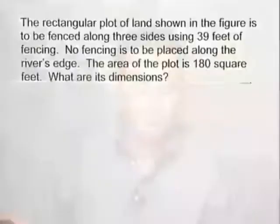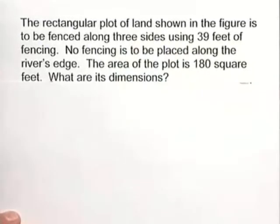Here's another nice word problem. The rectangular plot of land shown in the figure is to be fenced along three sides using 39 feet of fencing. No fencing is to be placed along the river's edge. The area of this plot is 180 square feet. What are the dimensions?